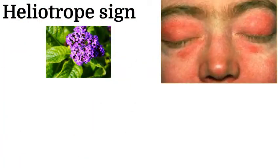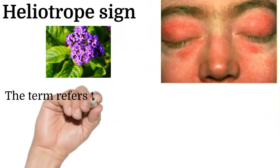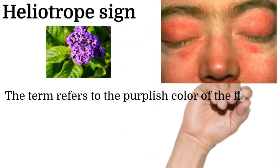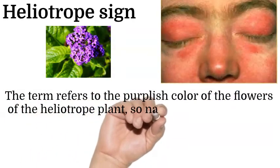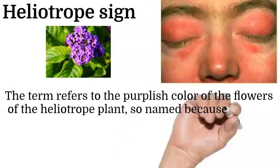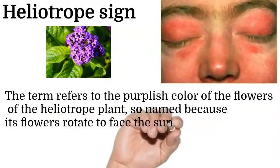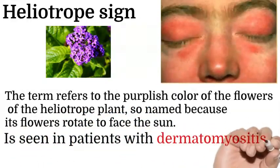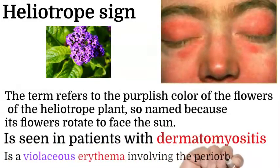Heliotrope sign: the first picture shows a heliotrope plant and the second picture shows the heliotrope sign. The term refers to the purplish color of the flowers of the heliotrope plant, so named because its flowers rotate to face the sun. The second picture is seen in patients with dermatomyositis, where there is a violaceous erythema involving the periorbital skin.